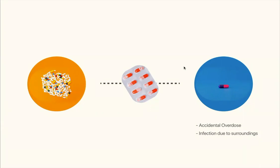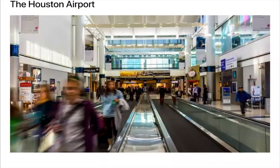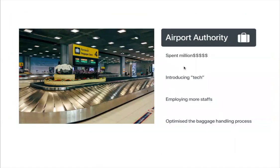Now let's look at friction in a larger system — like transportation or logistics. Take Houston Airport, one of the busiest airports in Texas. The classic problem was the waiting period: passengers always complained about waiting a long time before getting their luggage after boarding from the plane. The authorities spent a lot of money introducing new technologies to speed up the process, like faster conveyor belts and multiple staff on multiple shifts, and successfully reduced the wait period to an overall seven minutes.